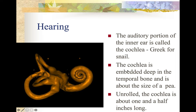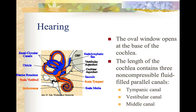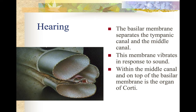Unrolled, the cochlea is about one and a half inches long. The oval window opens at the base of the cochlea. The length of the cochlea contains three non-compressible fluid-filled parallel chambers: the tympanic canal, the vestibular canal, and the middle canal. The basilar membrane separates the tympanic canal and the middle canal. This membrane vibrates in response to sound. Within the middle canal, on top of the basilar membrane, is the organ of Corti — your receptor cell for hearing.